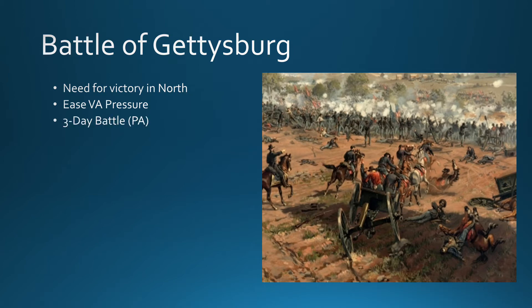This battle takes place over three days in the summer of 1863, and it's the furthest the South will ever push north, actually into Gettysburg, Pennsylvania. The first two days, the Confederacy advances — not enough to necessarily win, but certainly the tide is on the Confederate side. Things are looking gloomy for the Union.